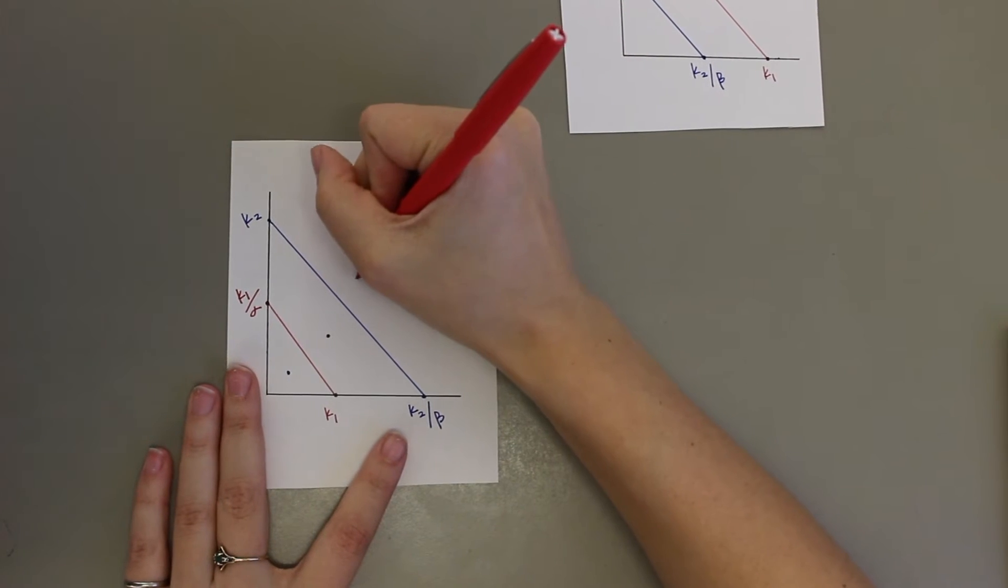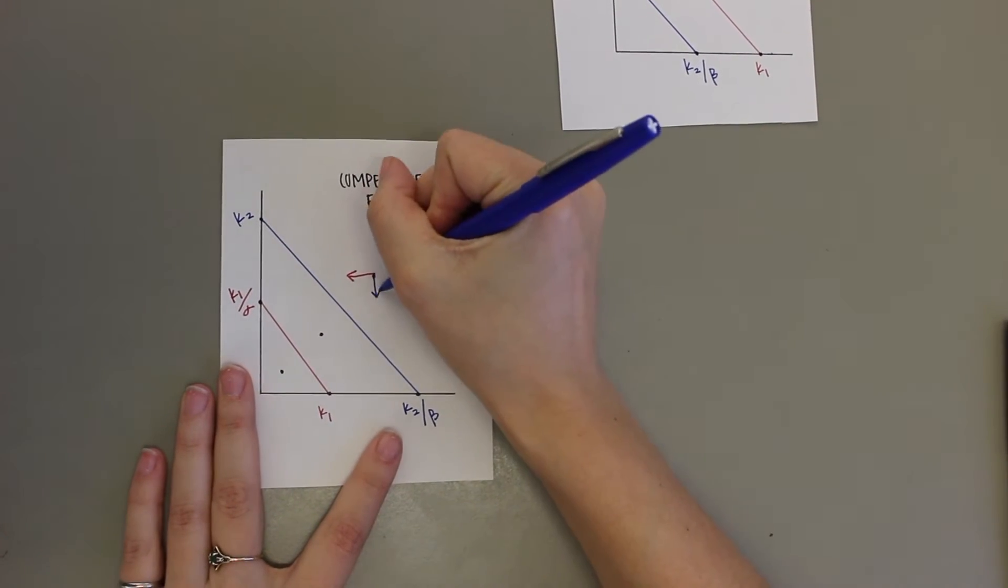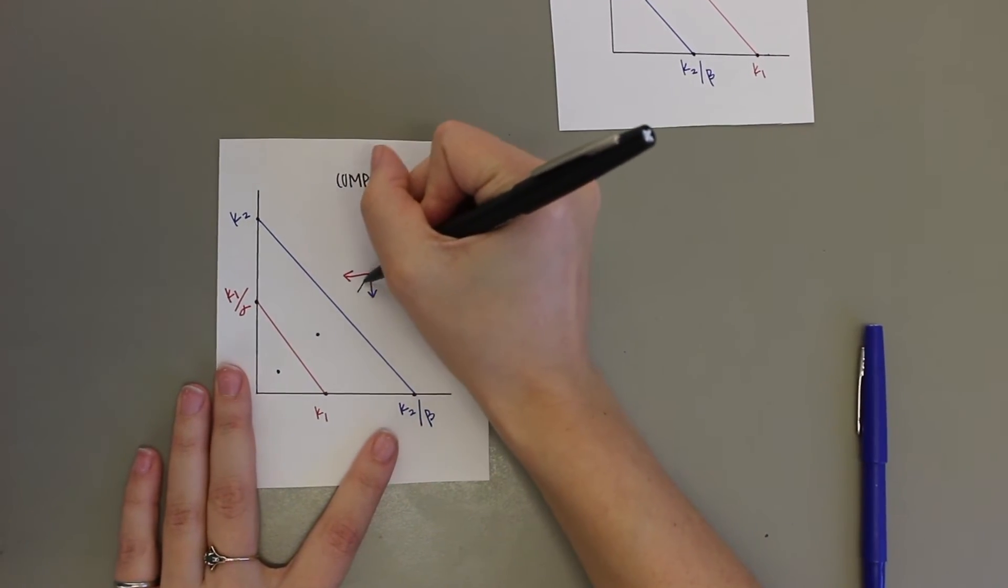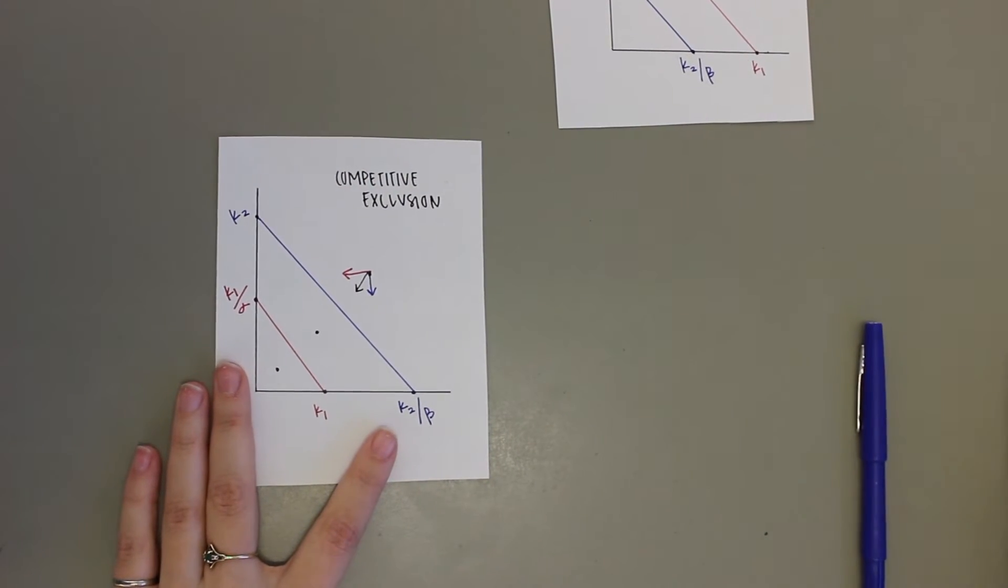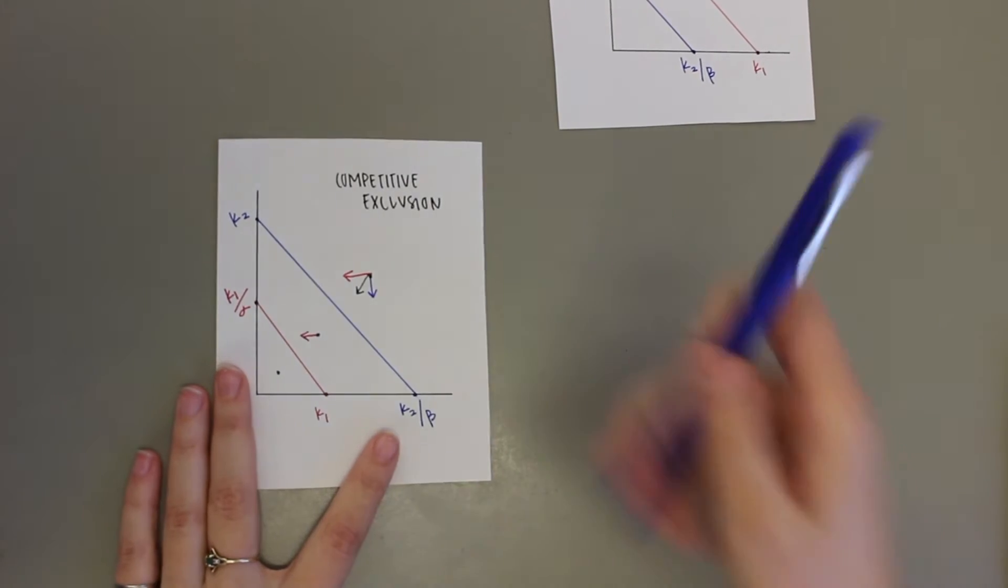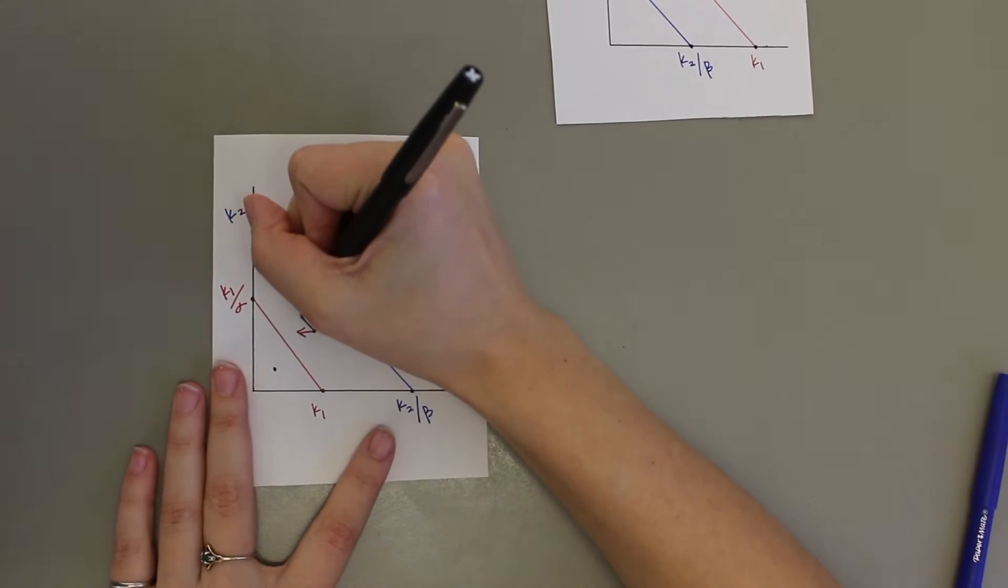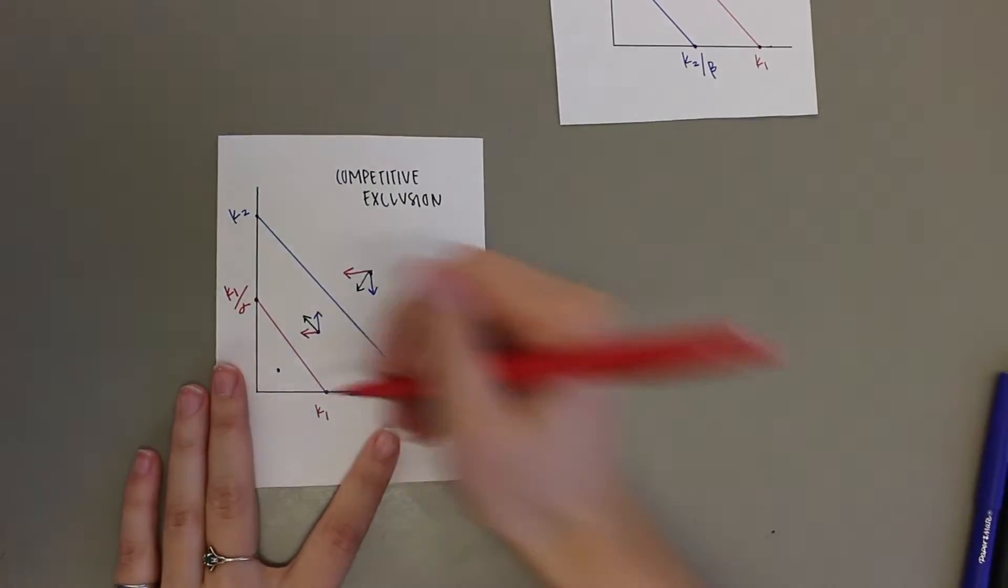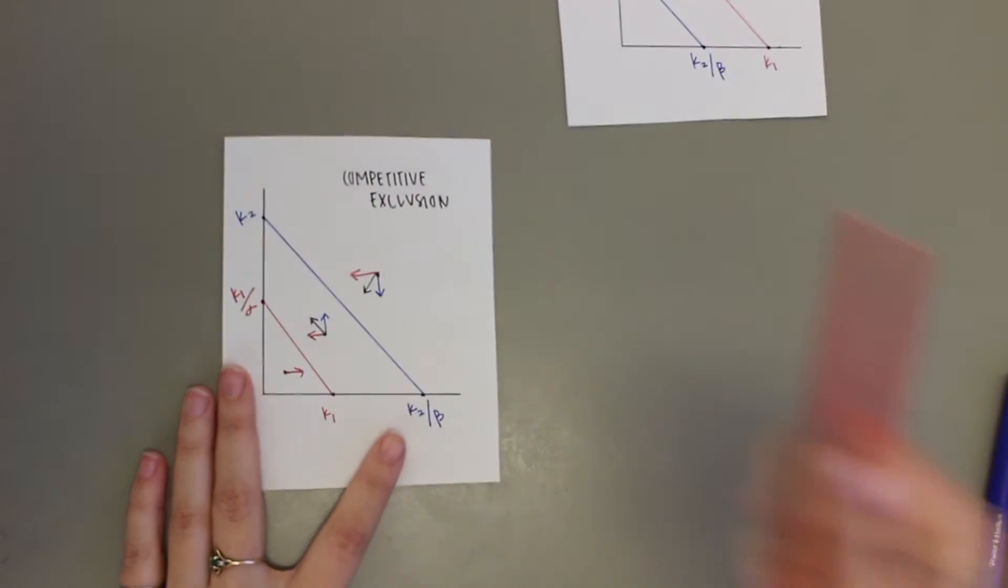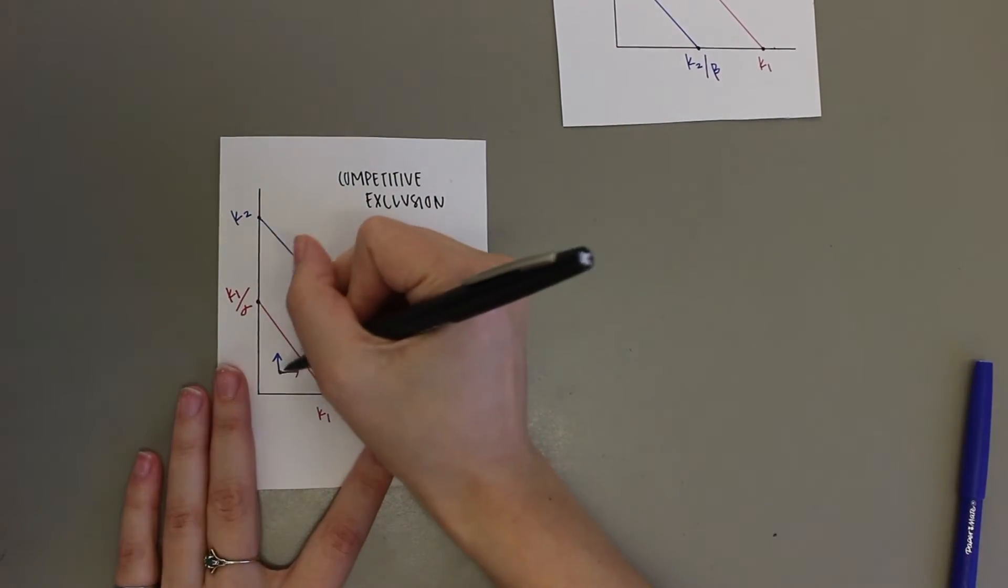If the populations lie outside the carrying capacity of species two, then both species populations will be decreasing because they are above both of their carrying capacities. If the populations lie between species one and two carrying capacity, then species two population will increase and species one population will decrease. If the populations lie below species one, then both populations will be increasing because the populations would be below both species carrying capacity.